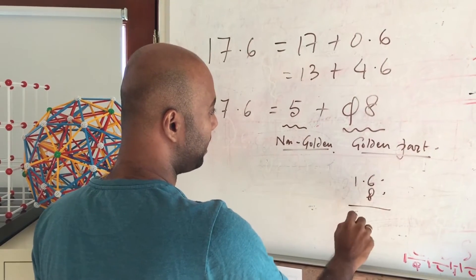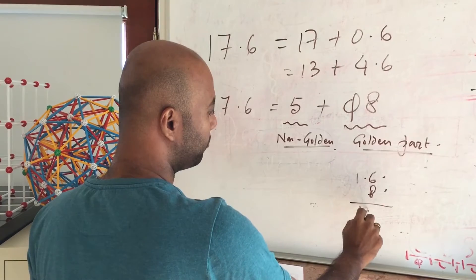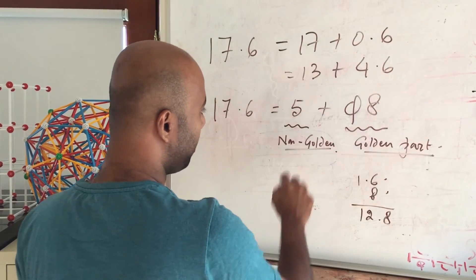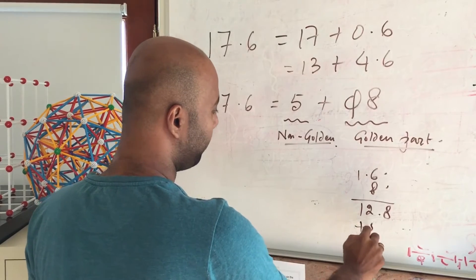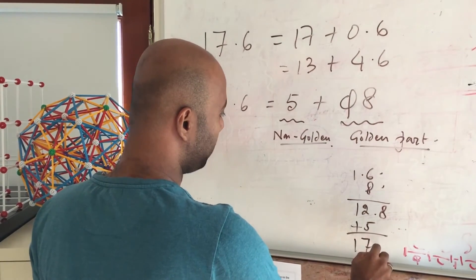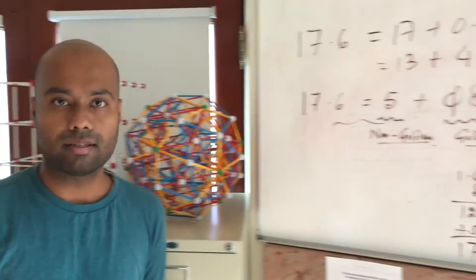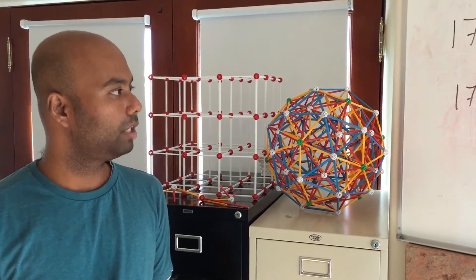So multiply that by 8, you get 12.8, if I'm not wrong, 8648, and then plus 5, so that does turn out to be close to 17.6. This is the essence of the golden decomposition.